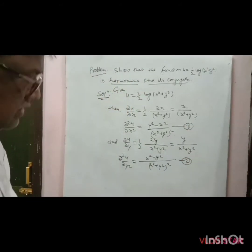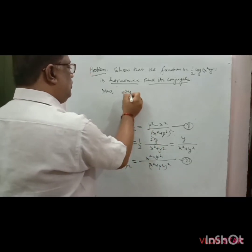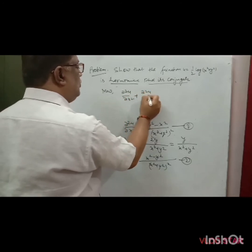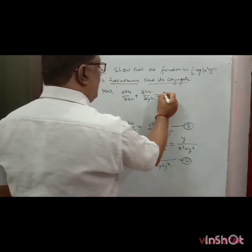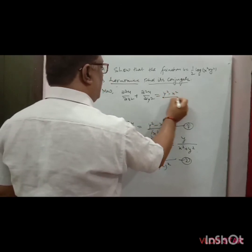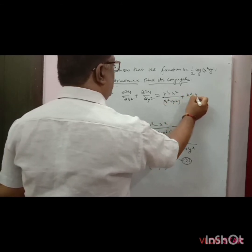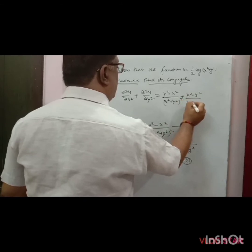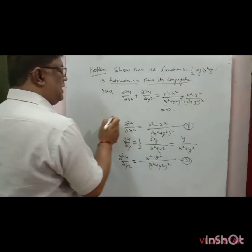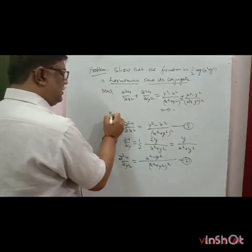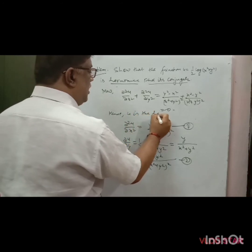Now add equations 1 and 2: ∂²u/∂x² + ∂²u/∂y² = (y² − x²)/(x² + y²)² + (x² − y²)/(x² + y²)² = 0. This satisfies the Laplace equation, hence u is a harmonic function.